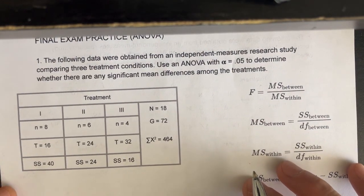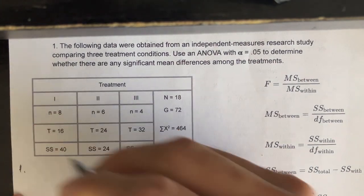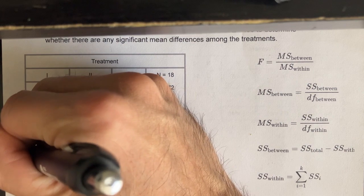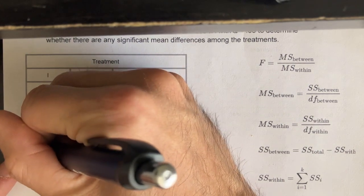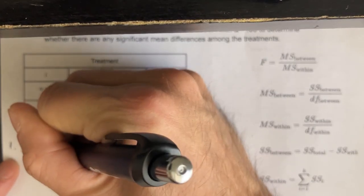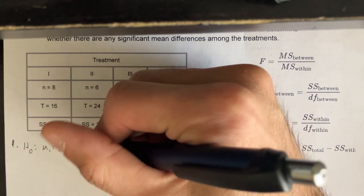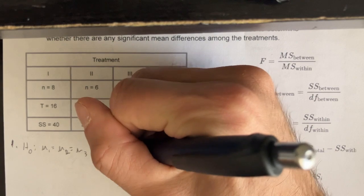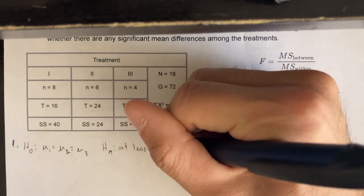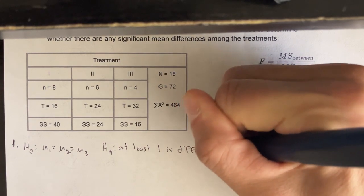Step one is to state the null and alternative hypotheses. For ANOVA, the null hypothesis is always that all the means are equal: μ₁ = μ₂ = μ₃. The alternative hypothesis is simply that at least one of them is different.